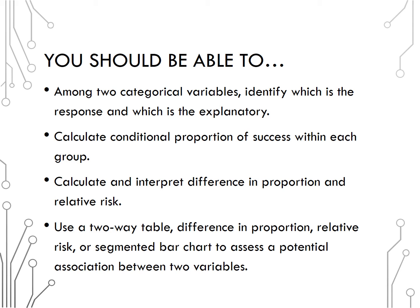Calculate the conditional proportion of success within each group, calculate and interpret the difference in proportion as well as relative risk, and use a two-way table, difference in proportion, relative risk, or segmented bar graph to assess a potential association between two variables.